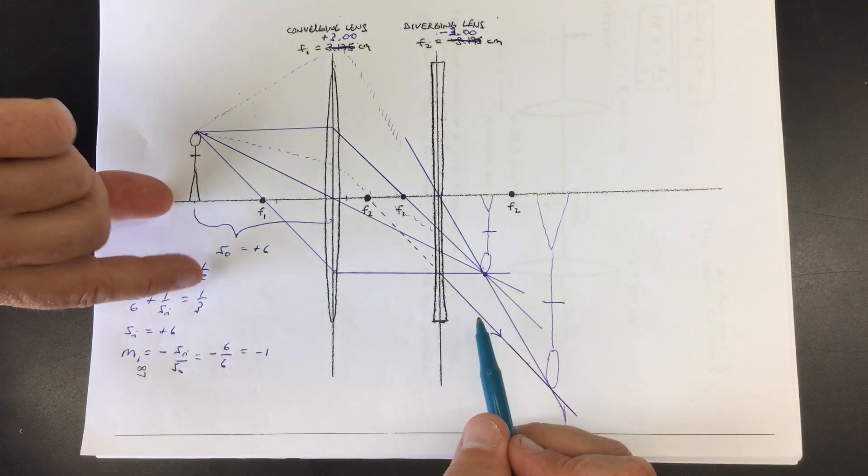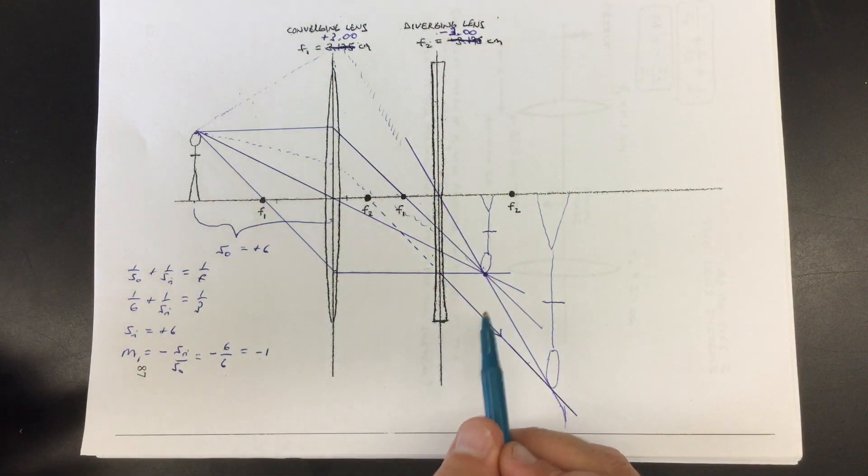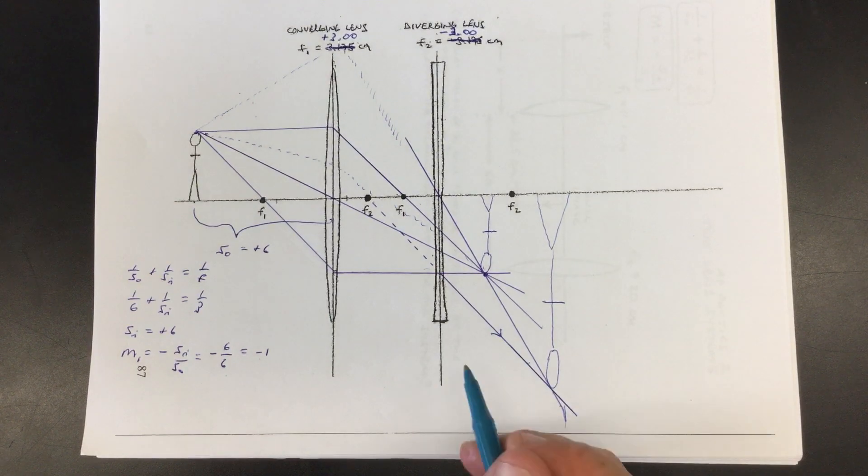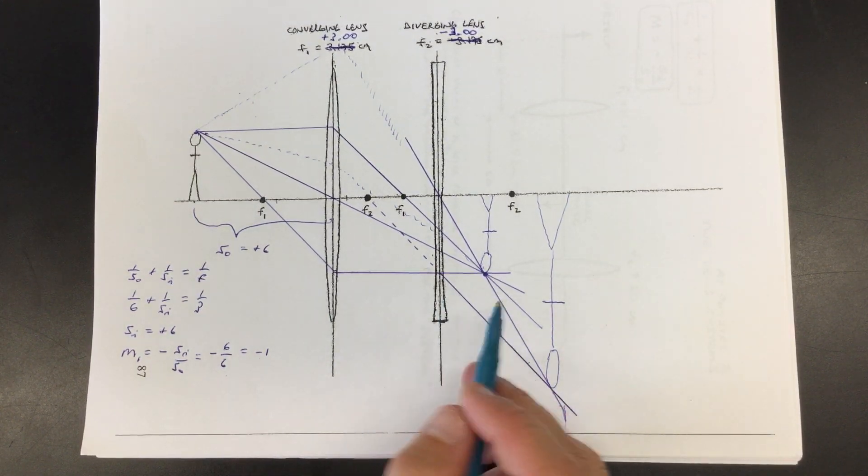So it's negative meaning upside down and one meaning a hundred percent of the size that it was before. So, so far, my drawings looking pretty good.